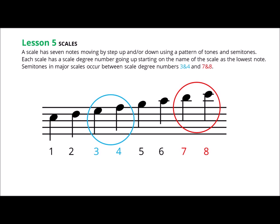Each scale has a scale degree number going up, starting on the name of the scale as the lowest note. A scale has 8 notes moving by step up and or down using a pattern of tones and semitones.